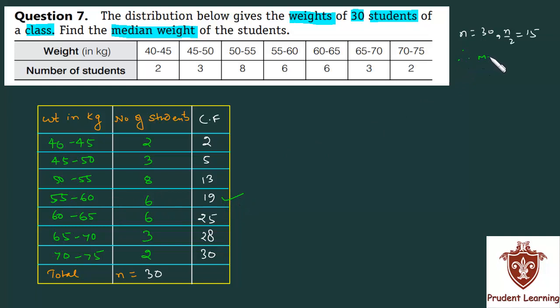Therefore, the median class is 55 to 60. This is the lower boundary of the median class L, which is 55, and the frequency of the median class F, which is 6.